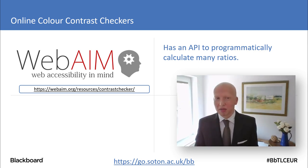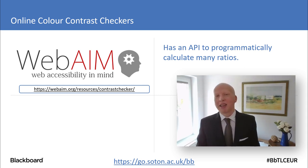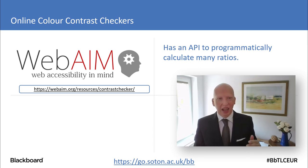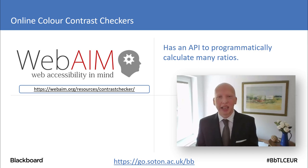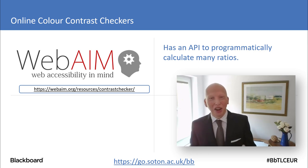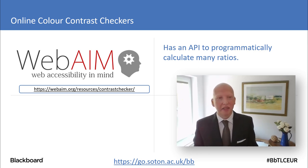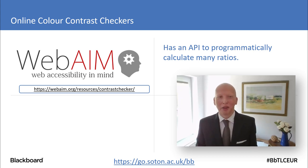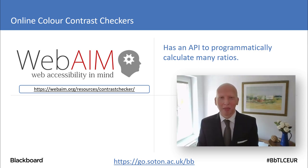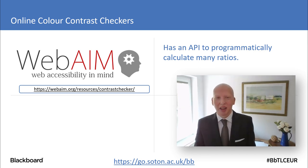WebAIM is a fantastic resource. They have a colour contrast checker which also has an API — you can use curl to send a string with two HTML colours and it will send you back JSON with the ratio and various other bits of information. This is the only one I found that does this, so if you are a developer I particularly recommend checking out their API.